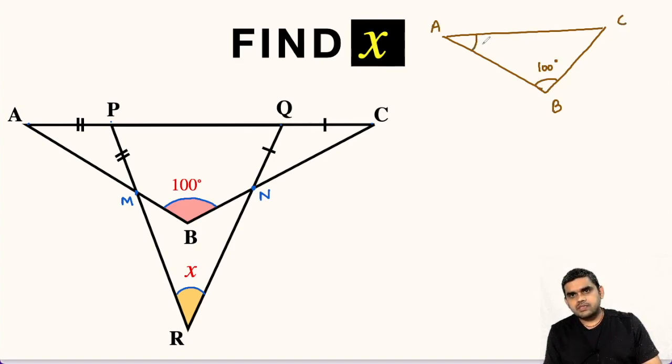Let us assume this angle as theta 1 and this angle as theta 2. By angle sum property in triangle ABC, theta 1 plus theta 2 plus 100 degrees equals 180 degrees.